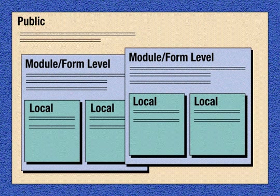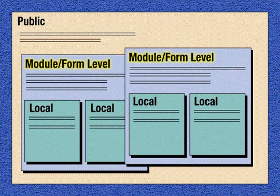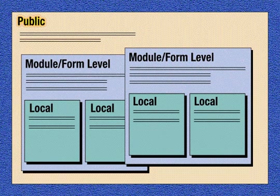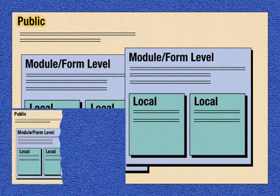When you're declaring variables, one of the first things you need to consider is each variable's scope. Scope refers to which parts of your program can see which variables. A variable can be local, module, or public in scope. We'll discuss each.